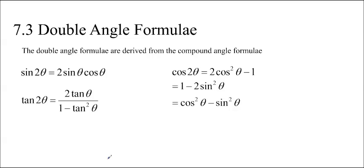So the double angle formulae are actually derived from the compound angle formulae, which we talked about in 7.2. We're going to derive those in class. For now, you can just memorize them. Sine 2 theta equals 2 sine theta cos theta. Tan 2 theta equals 2 tan theta over 1 minus tan squared theta. And cos 2 theta could be any of these three things: 2 cos squared theta minus 1, 1 minus 2 sine squared theta, and cos squared theta minus sine squared theta.